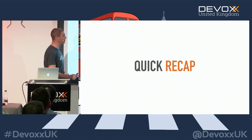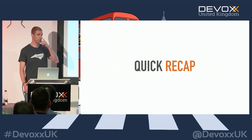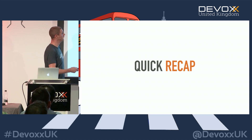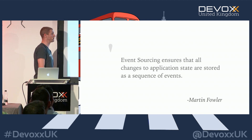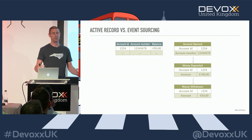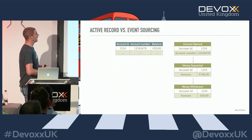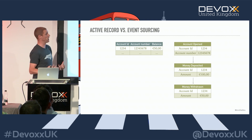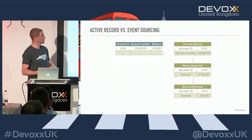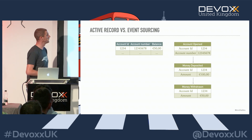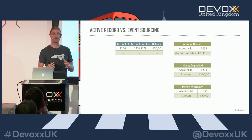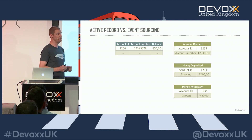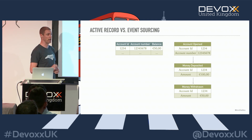Let's do a quick recap of event sourcing theory. Martin Fowler stated that event sourcing records all changes to application state as a sequence of events rather than the application state itself. If we look at the active record pattern, it describes our objects from database tables, and those records always reflect the current state of things — not what has led up to that state or why it has transpired, but just current state.